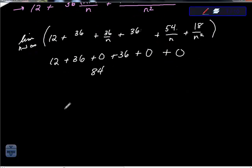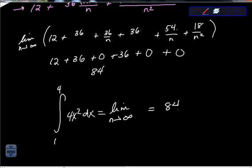So this is what we have to say at the end. And that the definite integral from 1 to 4 of 4x² dx is equal to the limit as n goes to infinity of all of that crap up there is equal to 84.